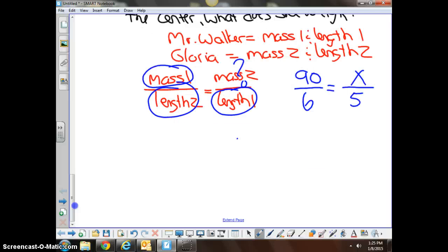You have a proportion set up with a variable, so you're going to solve it as you did earlier on, or you saw me do it earlier on in the notes. Cross product would be six X, 90 times five is 450. Solve for X, divide by six, and X equals, I believe, 75 pounds.